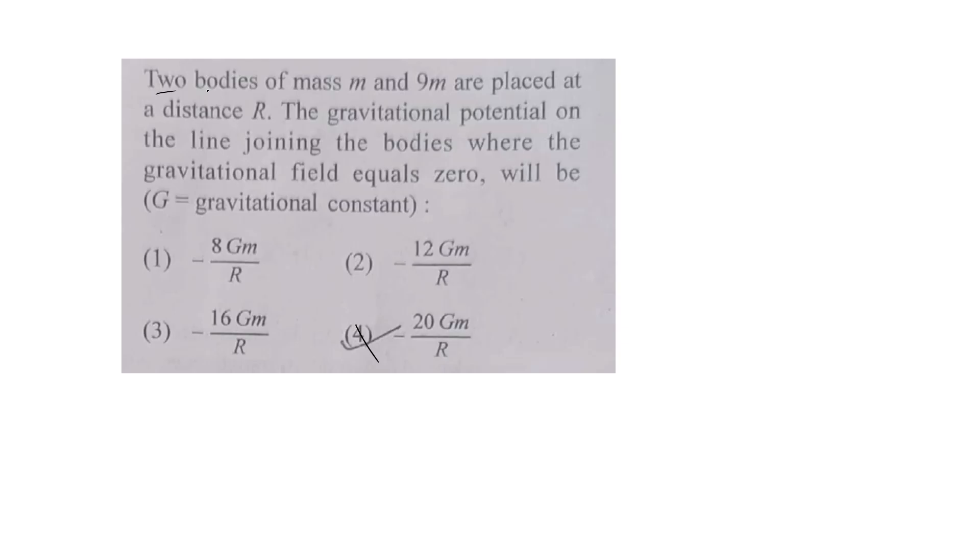Okay, let's go to the next question. Two bodies of masses m and 9m are placed at a distance R. The gravitational potential on the line joining the bodies where the gravitational field equals zero will be - G is the gravitational constant.